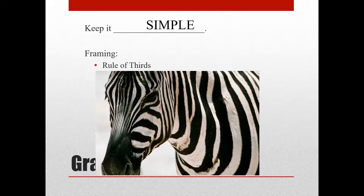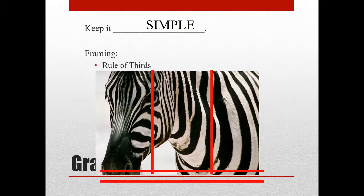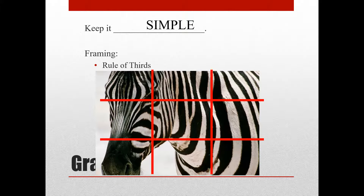The Rule of Thirds involves taking your image and dividing it into three sections by drawing two vertical lines, and then dividing it into three sections the other way by drawing two horizontal lines. You end up with this rule of thirds grid, and putting things on the third lines where they intersect makes for a much more interesting photo because it creates asymmetrical symmetry.